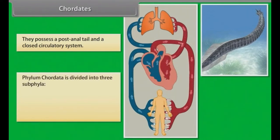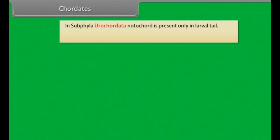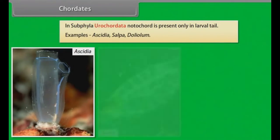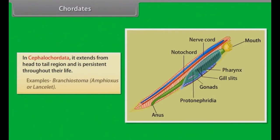Phylum Chordata is divided into three sub-phyla: Urochordata, Cephalochordata, and Vertebrata. In sub-phylum Urochordata, the notochord is present only in the larval tail. Examples: Ascidia, Salpa, Doliolum. In Cephalochordata, it extends from head to tail and is persistent throughout life. Examples: Branchiostoma, Amphioxus, and Lancelet.